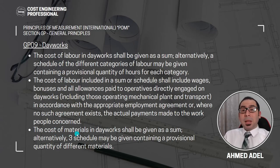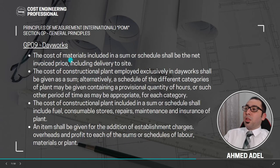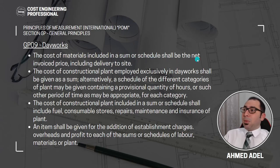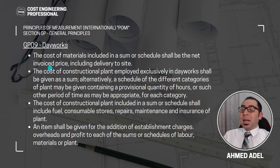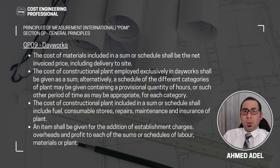Day works can also include materials. The cost of materials in day works shall be given as a sum. Alternatively, a schedule may be given containing a provisional quantity of different materials. The cost of materials included in a sum or schedule shall be the net invoiced price, including delivery to site. For example, if you keep a rate for the supply of sand, the rate is how much one cubic meter of sand is invoiced to you plus delivery to site.